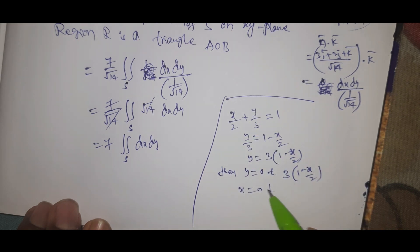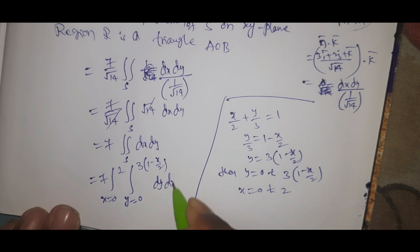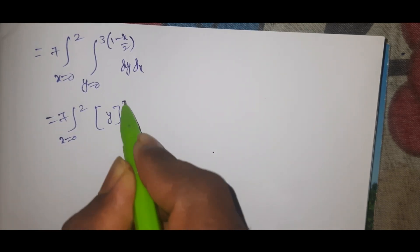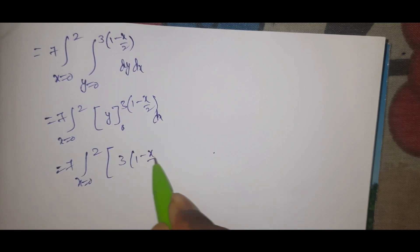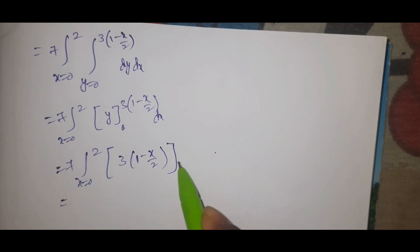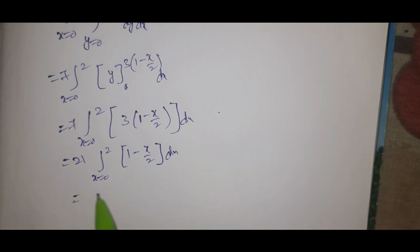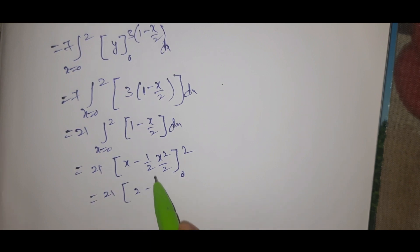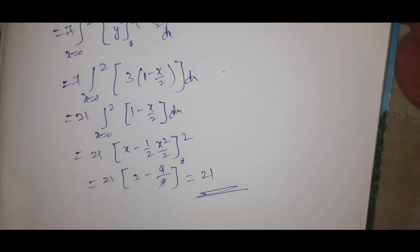So the integral becomes 7 ∫₀² ∫₀^{3(1−x/2)} dy dx. Integrating over y: 7 ∫₀² 3(1 − x/2) dx = 21 ∫₀² (1 − x/2) dx = 21 [x − x²/4]₀² = 21 [2 − 4/4] = 21 [2 − 1] = 21 × 1 = 21.